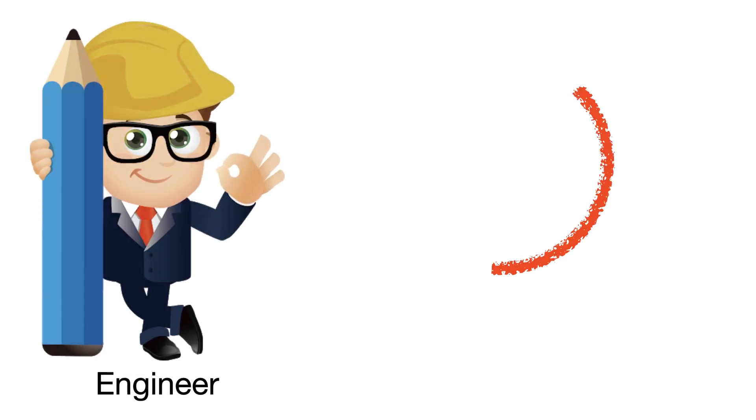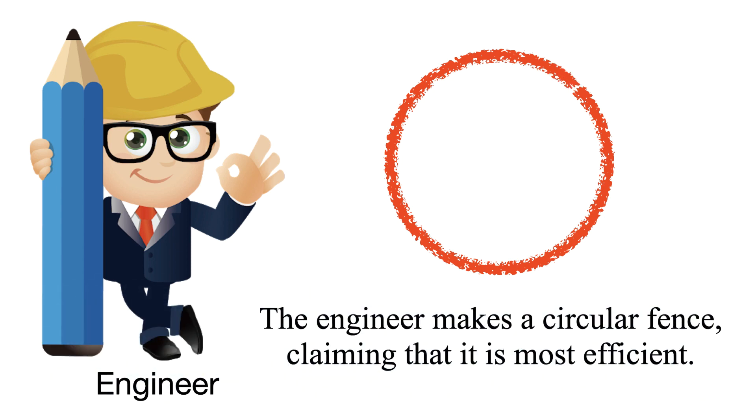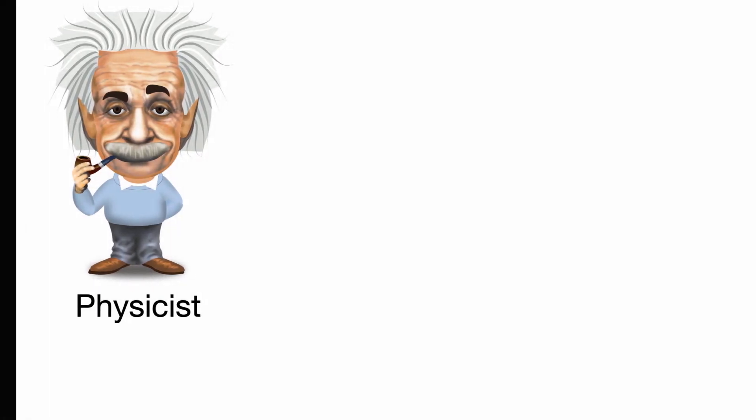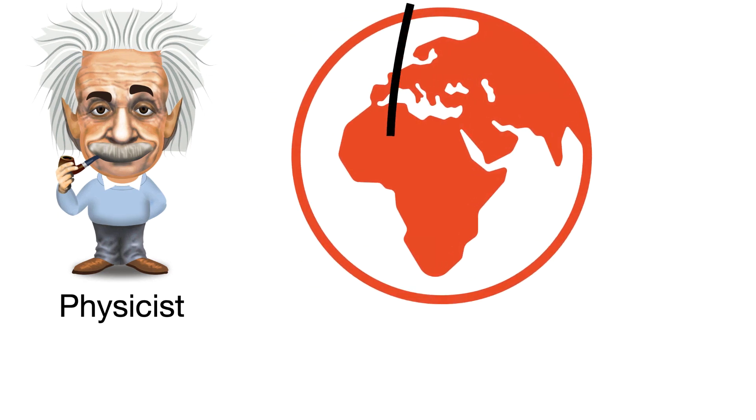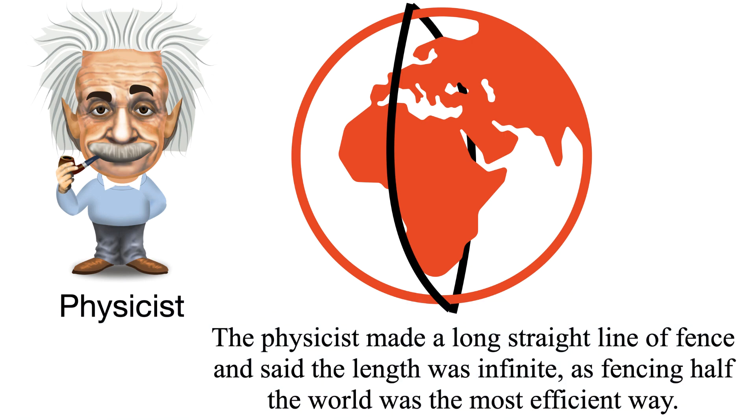The engineer makes a circular fence, claiming that it is the most efficient. The physicist made a long straight line of fence and said the length was infinite, as fencing of the world was the most efficient way.